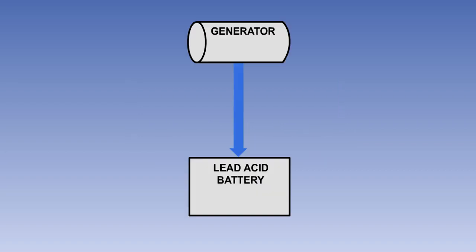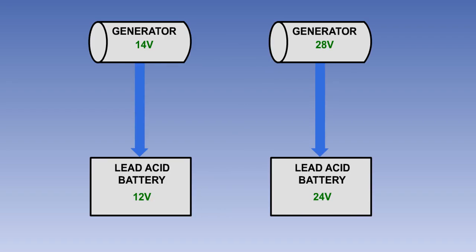A constant voltage charging system, using the engine-driven generator, is employed with most lead-acid batteries, to maintain the battery in a fully charged condition during flight. With this system, the output voltage of the generator is maintained constant, at 14 volts for a 12-volt battery, and at 28 volts for a 24-volt battery.